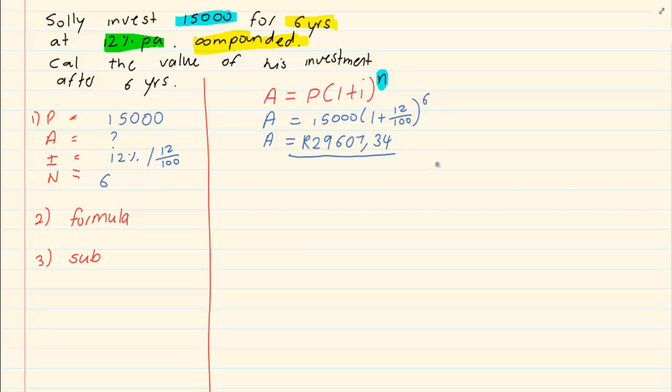Now compound interest, once we have the A, that is not how much interest he paid. That means at the end of 6 years in the bank he will have 29,607 rand 34 cents. But if they continue to ask you what was the interest he received, you know that he had paid in 15,000 rand.